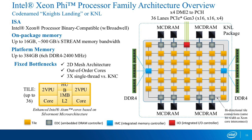All tiles are connected by a 2D network. The gray boxes are the MCDRAM memory controllers that drive the high-bandwidth memory. MCDRAM stands for multi-channel DRAM — that's on the package. The blue boxes are memory controllers for DDR4 memory — six channels. The red box contains the rest of the infrastructure and the connection to the outside world: PCIe, DMI, whatever we need.